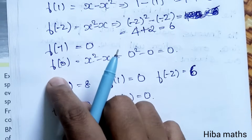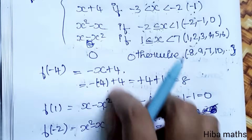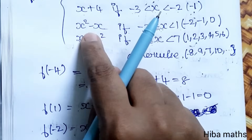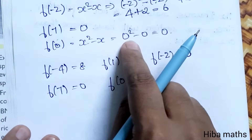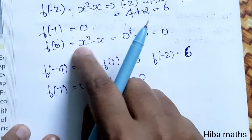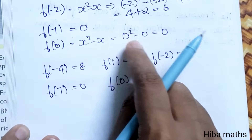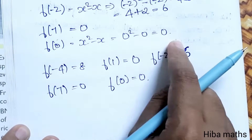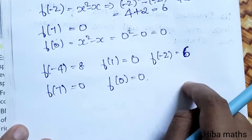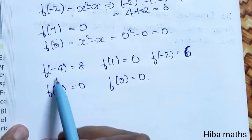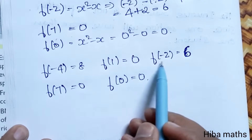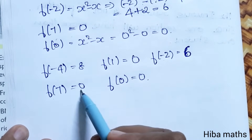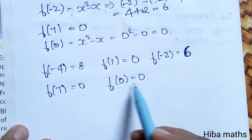f of minus 2 equals 4 plus 2 equals 6. Then f of 7 equals 0. And f of 0: zero falls in the third function x squared minus x, so 0 squared minus 0 equals 0. The final solutions are: f of minus 4 equals 8, f of 1 equals 0, f of minus 2 equals 6, f of 7 equals 0, f of 0 equals 0.